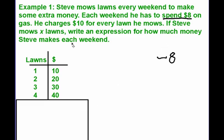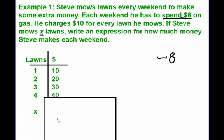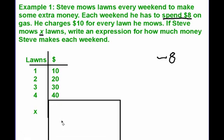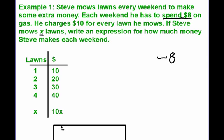We're told that Steve is mowing X number of lawns, so we have to figure out how much money Steve makes if he mows X lawns. Looking at our chart: 1 and 10, 2 and 20, 3 and 30, 4 and 40 — we're multiplying the number of lawns by 10. So for X lawns, it's 10 times X.